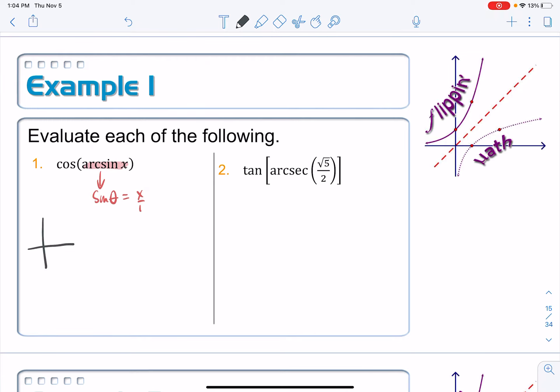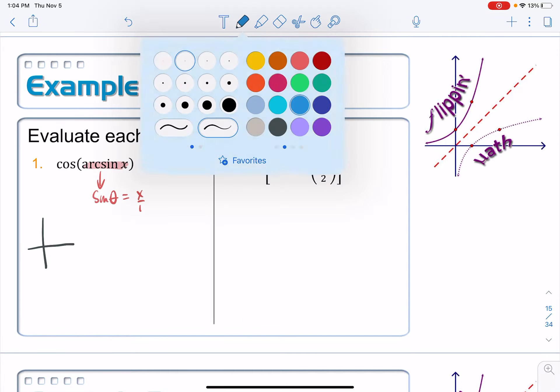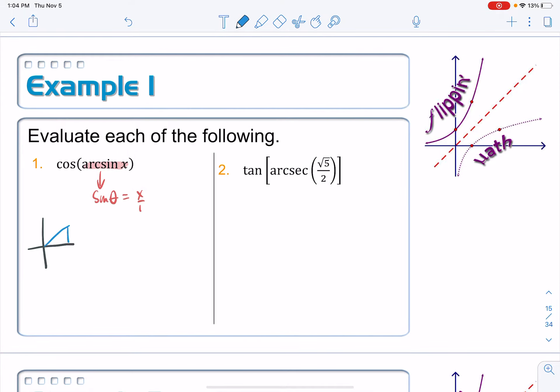Remember, as far as sine goes, it lives on the right side in quadrant 4 and quadrant 1, so it makes sense to just draw our triangle here in quadrant 1. I'm just going to draw myself a right triangle, call this thing theta. The opposite side is x, and the hypotenuse side is 1.